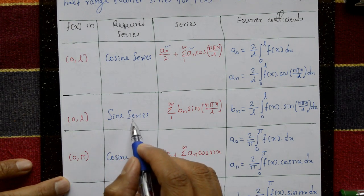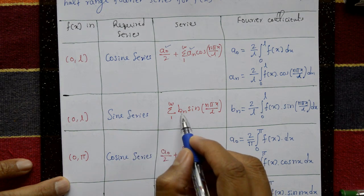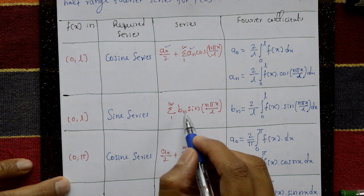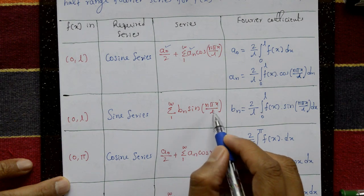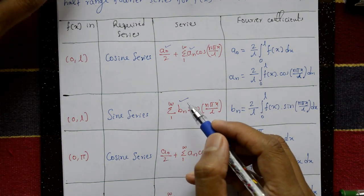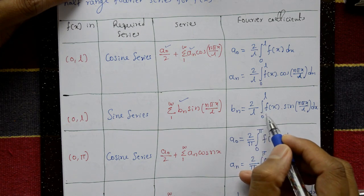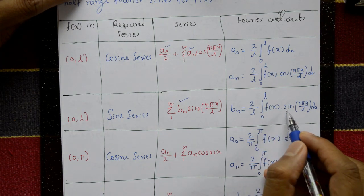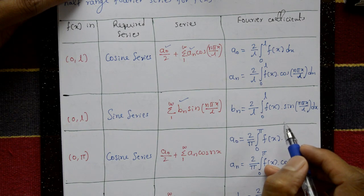When the interval is 0 to l but the required series is a sine series, then f(x) equals the summation from 1 to infinity of bₙ sin(nπx/l), where bₙ = (2/l) ∫₀ˡ f(x) sin(nπx/l) dx.